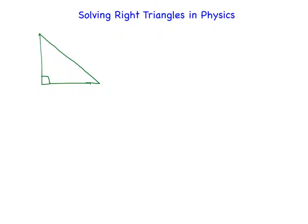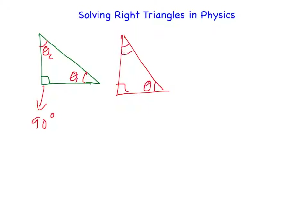This is a right triangle, and the reason that we know that is because this little box inside tells us that that is a 90 degree angle, which makes it a right triangle. That leaves the other two angles unknown. In physics we will use the Greek symbol theta to stand for angle, so we'll call this one theta 1 and this one theta 2. Sometimes you will see one angle shown with the theta symbol and the other with the alpha symbol — both are acceptable.